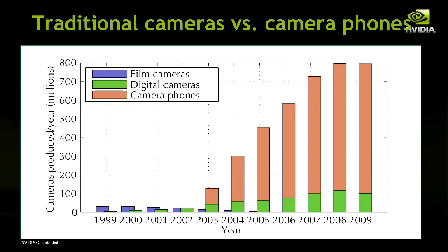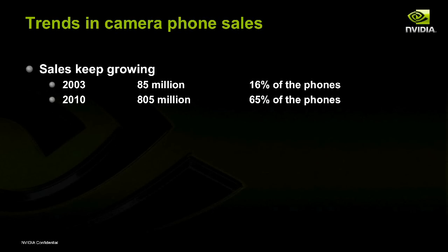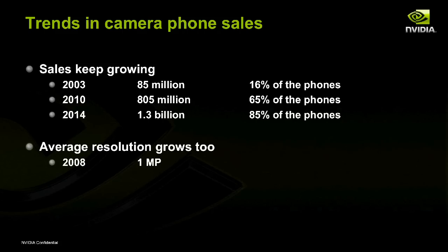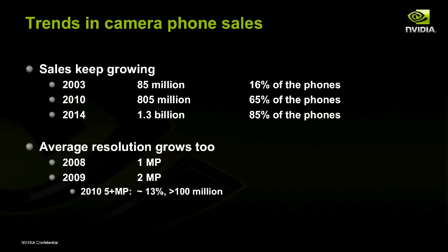Doing computer vision on a desktop is really cool. Doing it in a game console is really cool — Kinect has shown how exciting that can be. But when you're limited to that confined environment, the applications are limited. When you get into a mobile device you have anywhere, the sky's the limit. And not just the quantity of phones is increasing, but also the quality. Five megapixel is becoming about the norm for high-end smartphones — these camera phones are no longer junky cameras. They're getting to be really respectable, and that means the opportunity to do real computer vision is there.